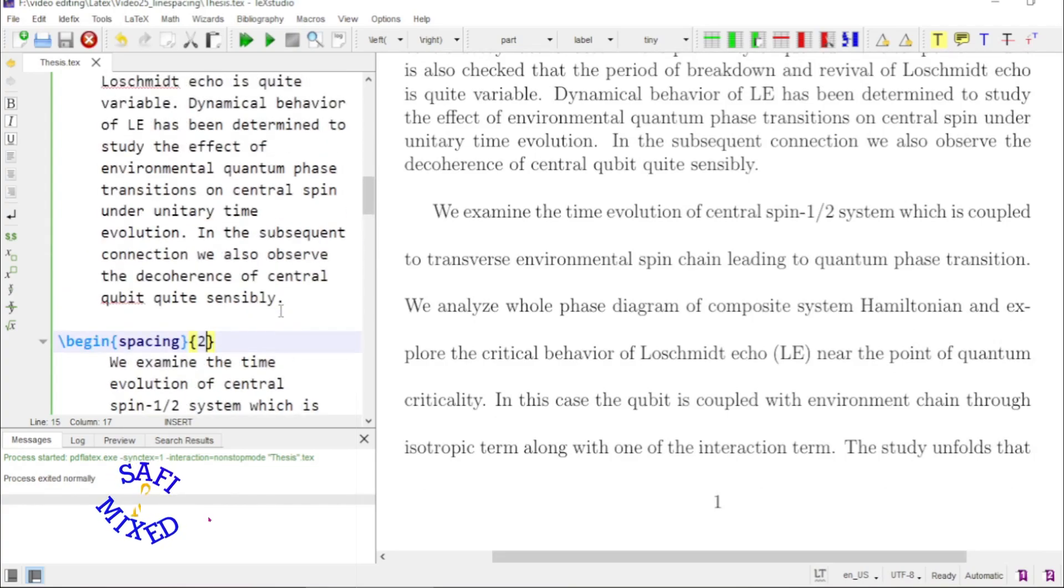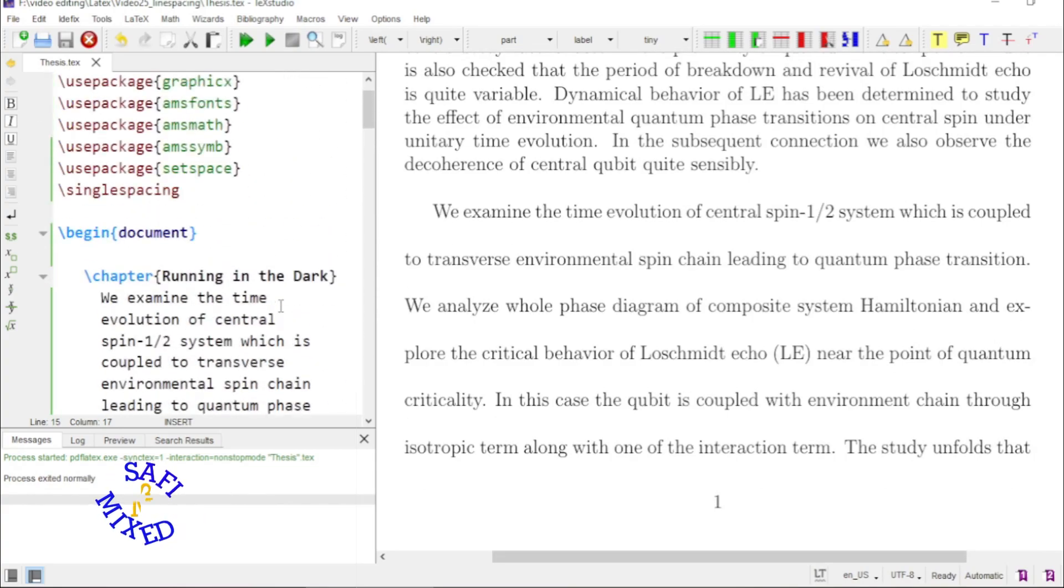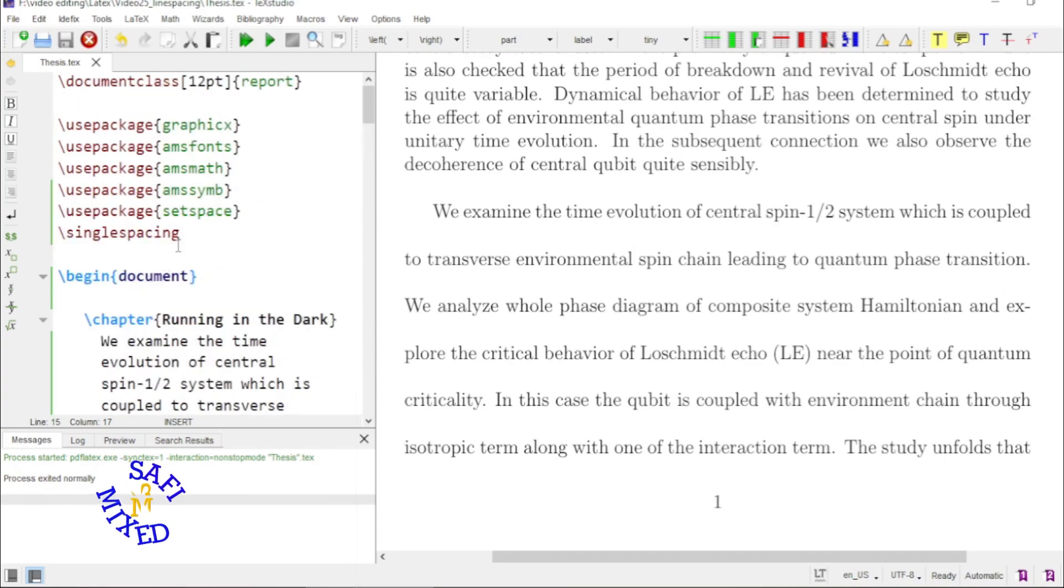So you can use the setspace package to change the line spacing of the whole document by putting a command in the preamble or you can change the line spacing of a part or a paragraph inside the document according to your own desire or to a desired value.